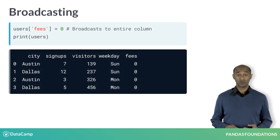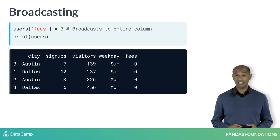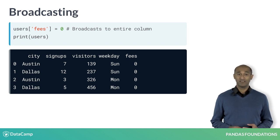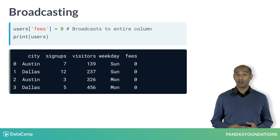Let's look again at broadcasting, a convenient technique in NumPy and Pandas. With the data frame users in memory, a new column — say fees — can be created on the fly. By using the new column label fees and assigning the scalar value 0, the value is broadcast to the entire column. Broadcasting saves time in generating long lists, arrays, or columns without loops.